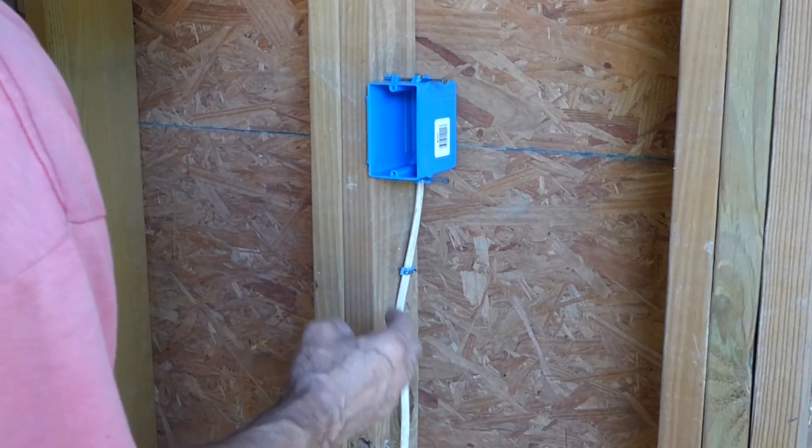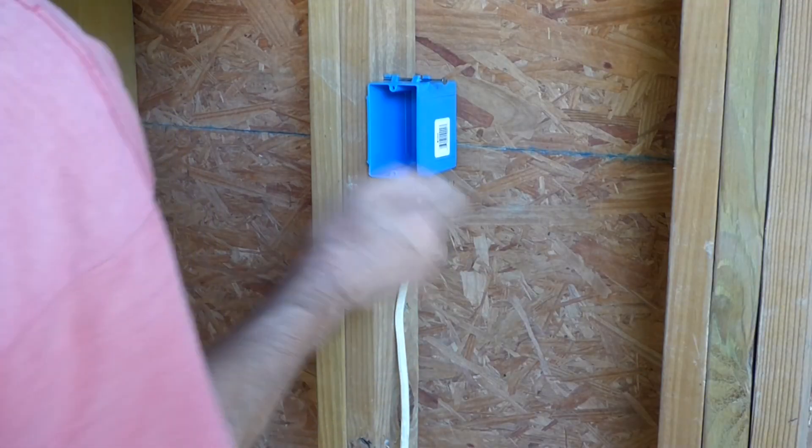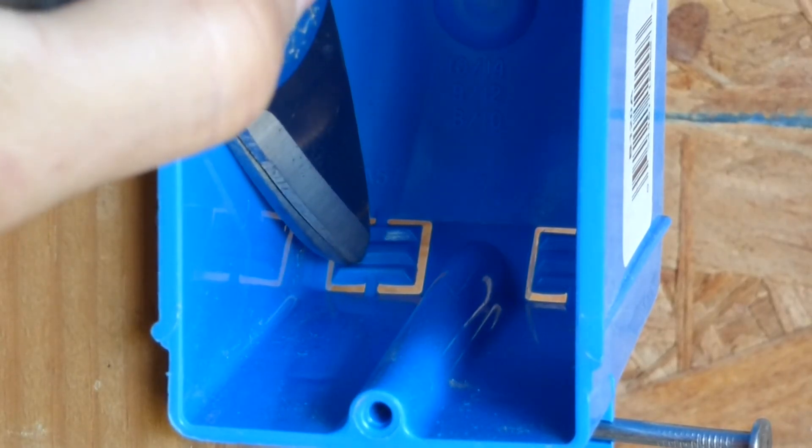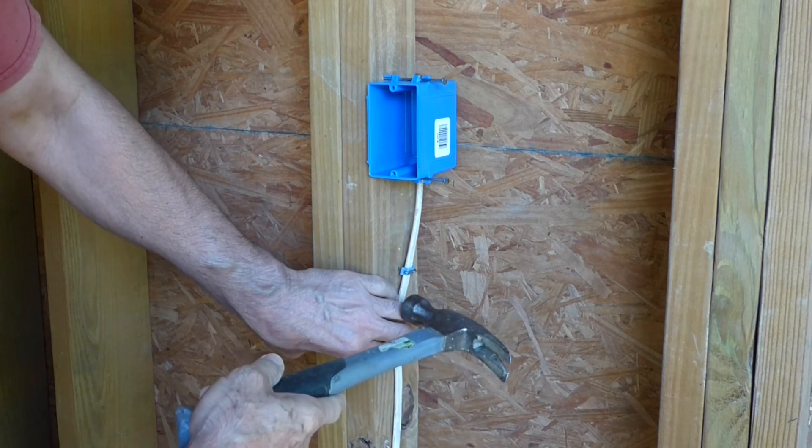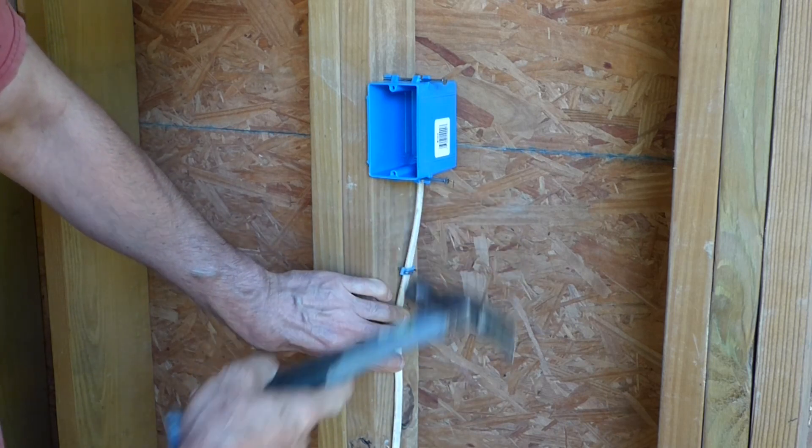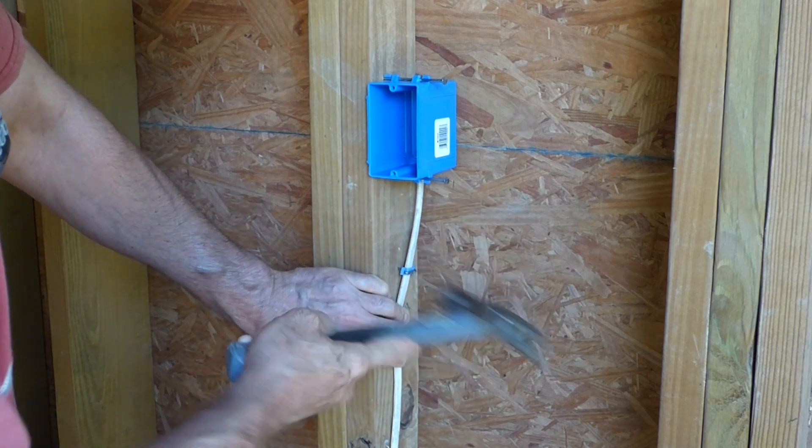With your wire pulled, you want to bring it into the box. Just take your screwdriver, a hammer, punch that out, and bring your wire right through there. Then secure the wire within six inches of the box with a staple.